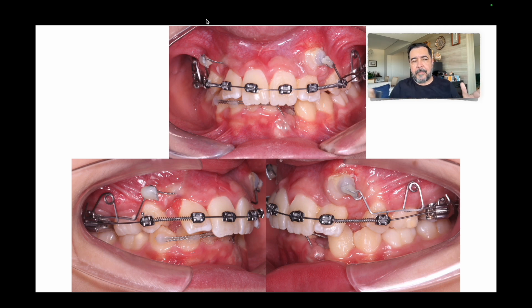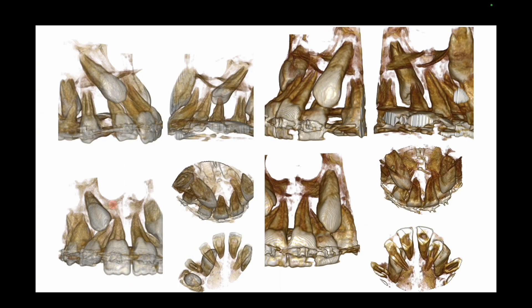For the complete distal movement, maybe we need more than six months, but in two to three months you can see the movement beginning. We see now that the canines are in a very difficult position, because this diagonal movement — if we impose direct traction to the wire — it's going to compress the root of the lateral incisor and will certainly cause root resorption, maybe severe root resorption.